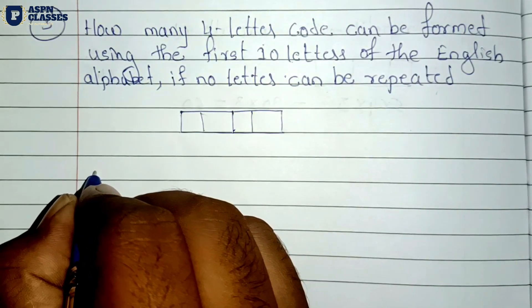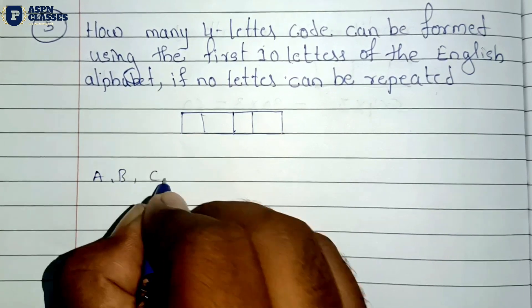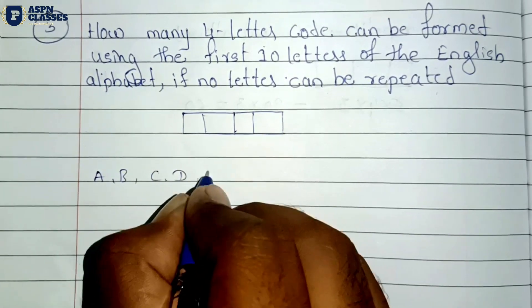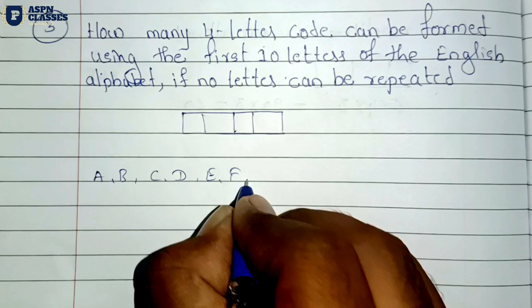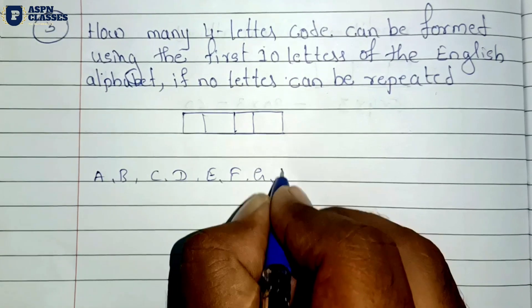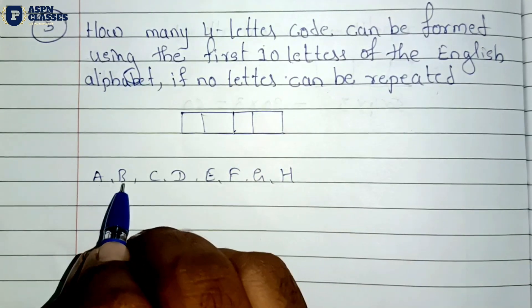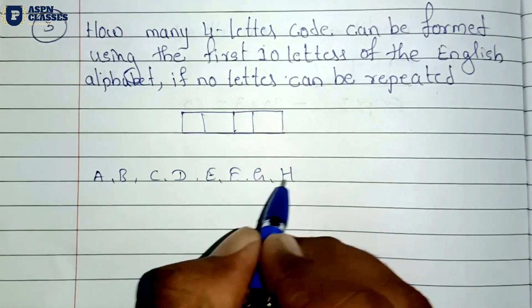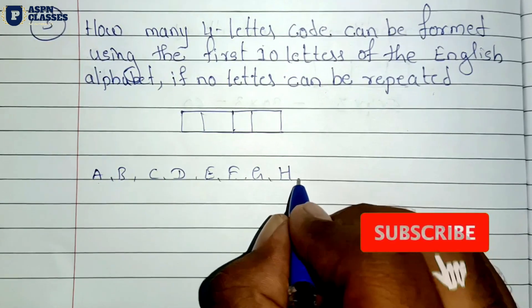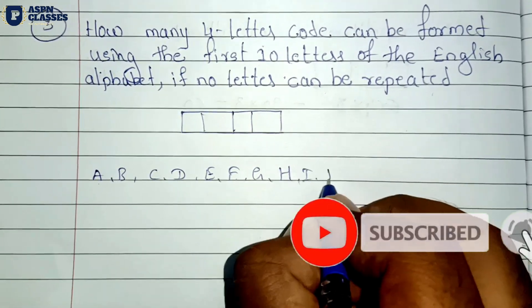The first 10 alphabets are: A, B, C, D, E, F, G, H, I, J — that is 10 letters total.